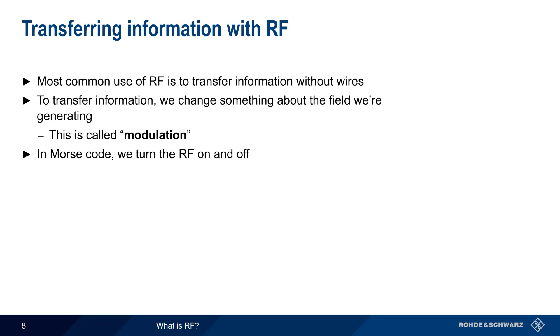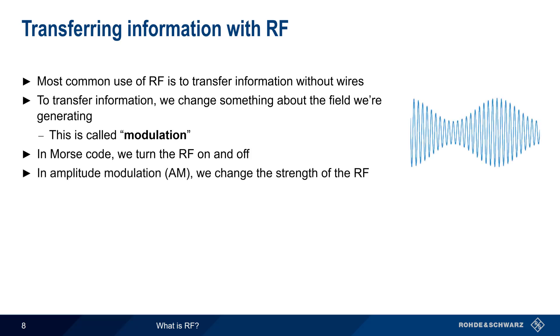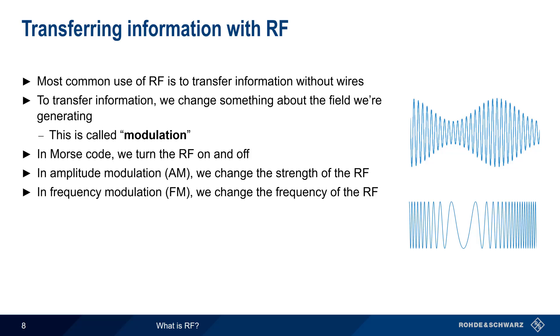The next step up from this on-off approach is amplitude modulation, or AM, where we change the strength of the RF to convey information. In frequency modulation, or FM, we change the frequency of the radiated signal, depending on the information we want to send. Both AM and FM are primarily used for analog modulation, such as in radio broadcasts. On the other hand, if we want to send digital information, we typically use more complicated modulation schemes, often changing both the amplitude and the phase, or frequency shift, of the RF at the same time.